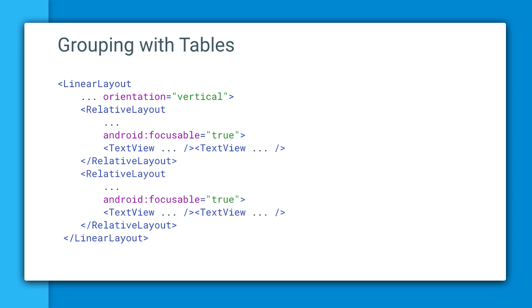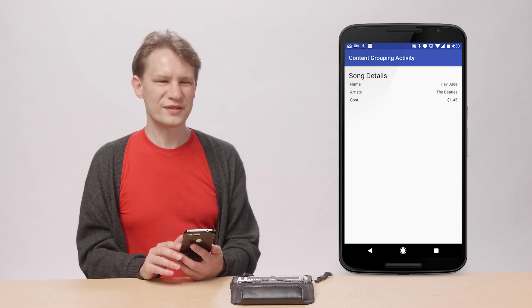For more complex structures such as tables, you can assign focus to a container holding one piece of the structure such as a single row. Grouping content both reduces the amount of swiping the user has to do while streamlining speech output.